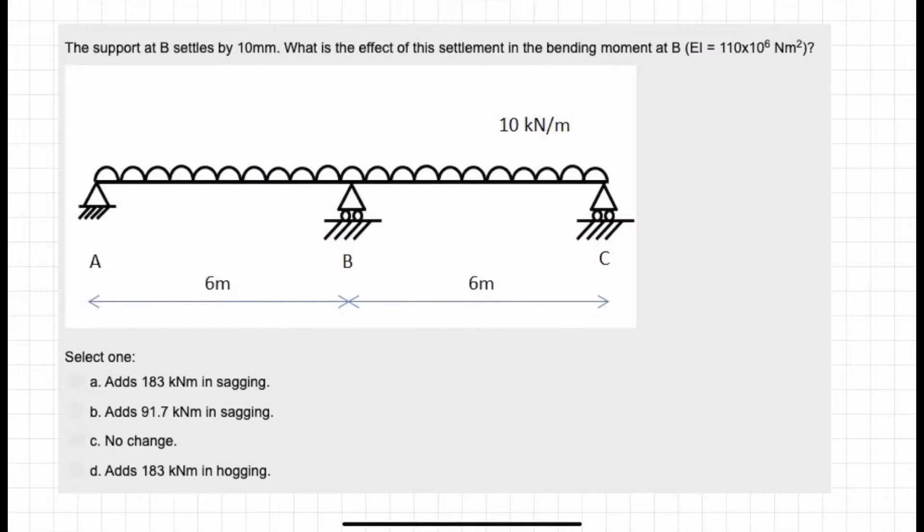Here we have another question from the iStructE structural behaviour course. The question is, the support at B settles by 10mm. What is the effect of this settlement in the bending moment at B? Give this problem a try for yourself and come back to it when you are done.